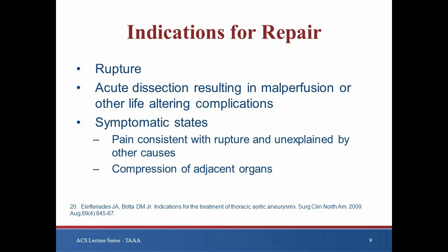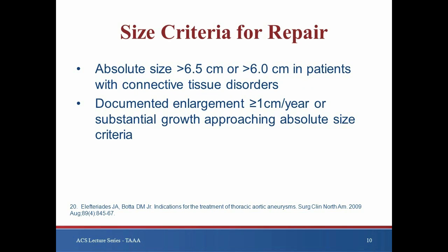Patients with symptoms of pain consistent with rupture, or pain unexplained by other causes, or compression of adjacent organs, should also be repaired. Patients with a thoracic aortic diameter greater than 6.5 cm, or in patients with connective tissue disorders with a diameter greater than 6 cm, should all undergo repair. Patients with documented enlargement greater than 1 cm per year or substantial growth approaching absolute size criteria should also undergo repair. It is important to note that absolute size criteria must be adjusted in patients of extreme size, and nomograms are available to assist a surgeon in decision-making for these patients.